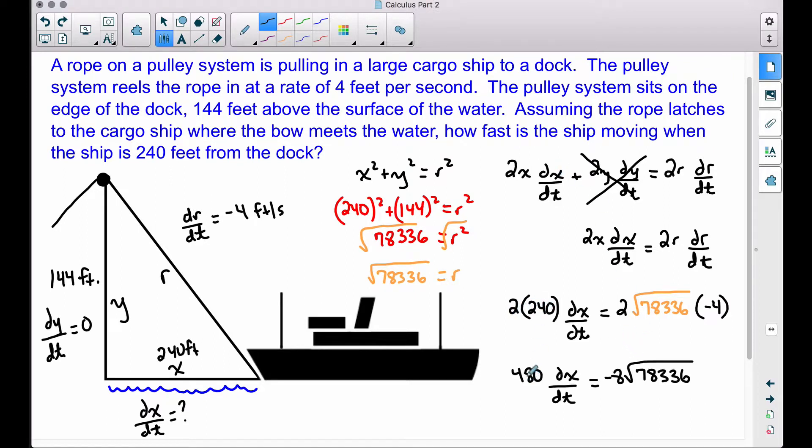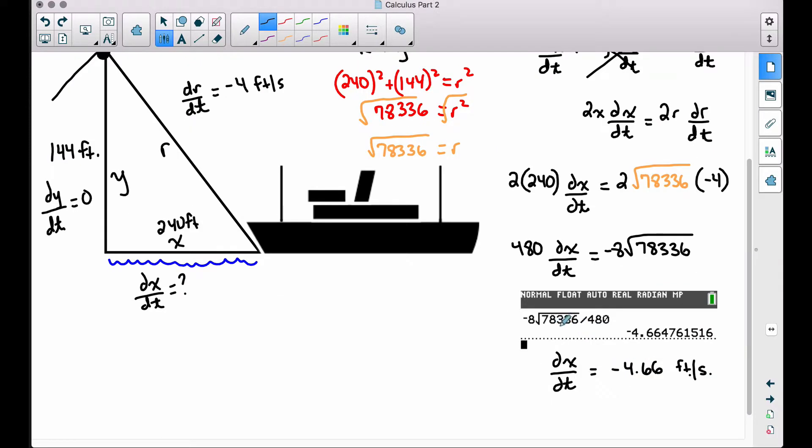Therefore, multiplying these two together, we get 480 dX/dt, and then taking the 2 times the negative 4, we have negative 8 square root of all that stuff. Finally, we can divide by 480 to get dX/dt by itself, and dividing that in the calculator, we get dX/dt is approximately negative 4.66 feet per second if we round to the nearest hundredth.